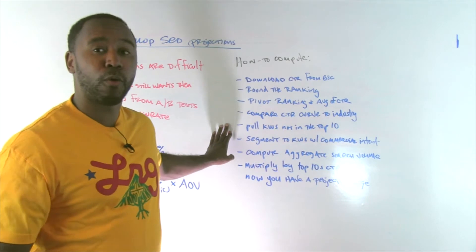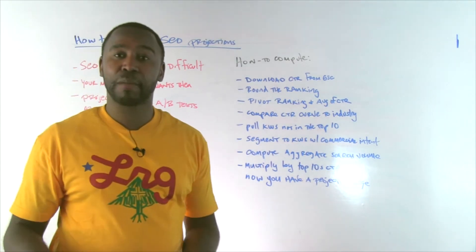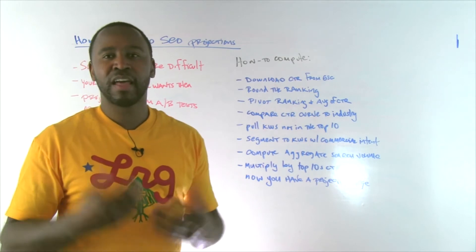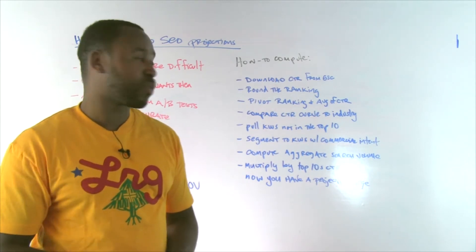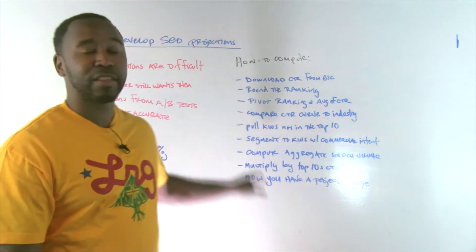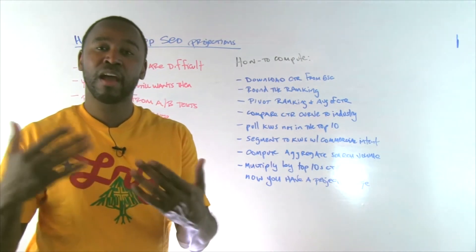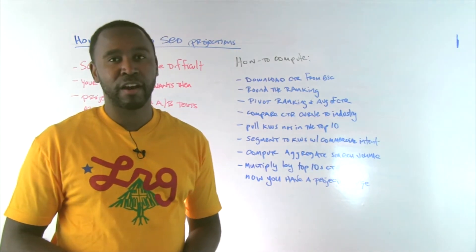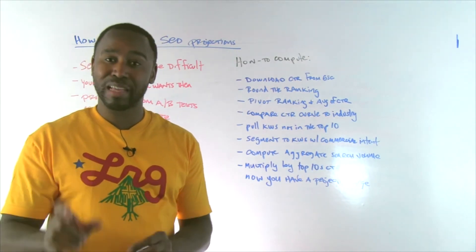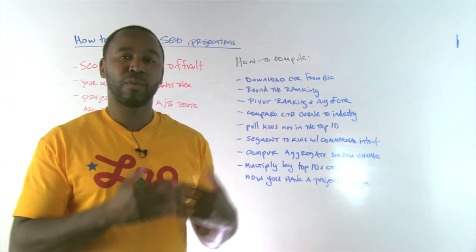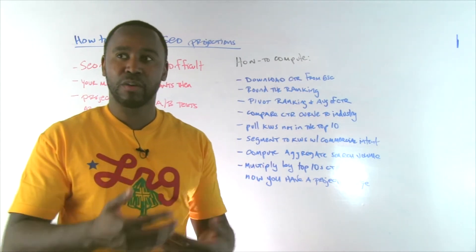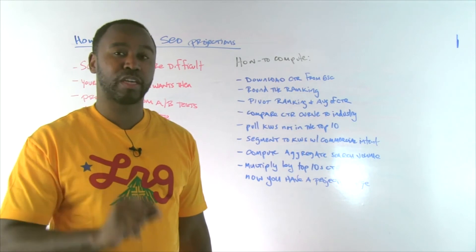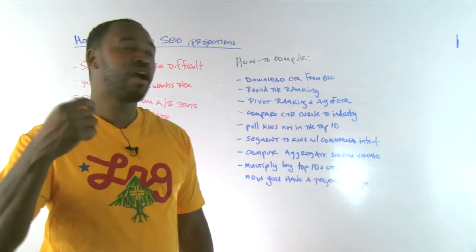So at this point, you want to pull keywords that you don't rank in the top 10 for. Use a tool like SEMrush or any of the other tools out there that can give you that data. Search metrics also comes to mind. Then segment those keywords down to the ones that are going to have a specific commercial intent. Your awareness keywords aren't going to be super valuable here unless your only goal is traffic. But if we care about what the business result is going to be from these efforts, then you're going to want to limit it to those keywords that have that more commercial intent.